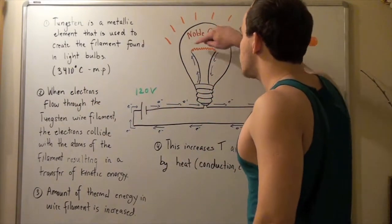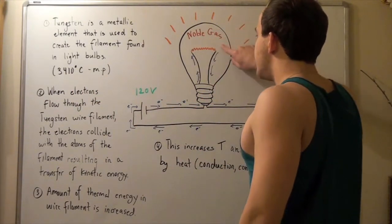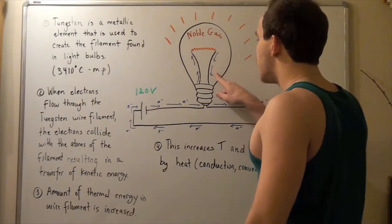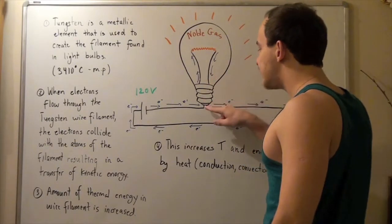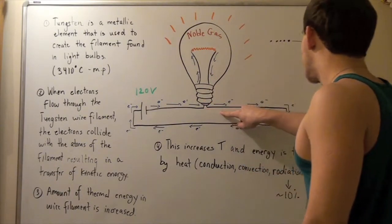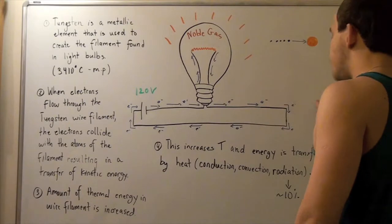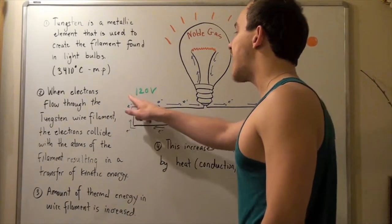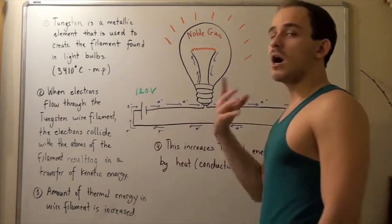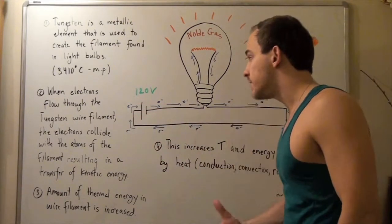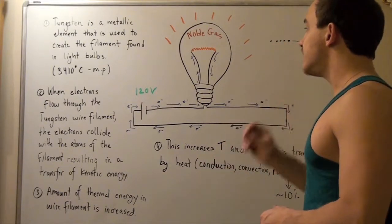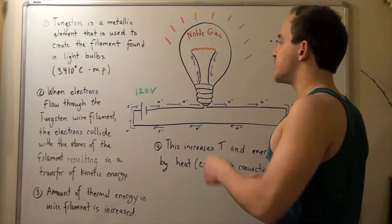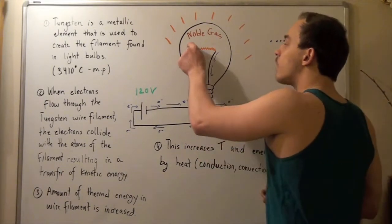Electrons move through our filament and into this part of our circuit. Then they go back into our main electric circuit, travel along this pathway, and finally end up in the cathode part of our battery. Let's examine what happens within our filament.